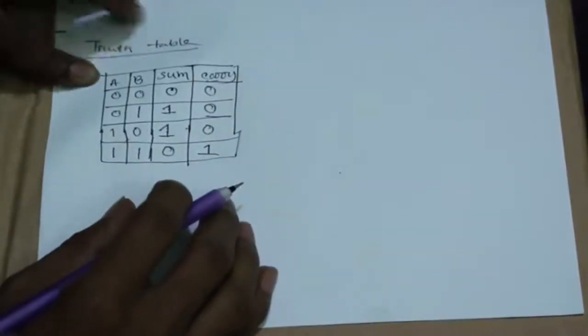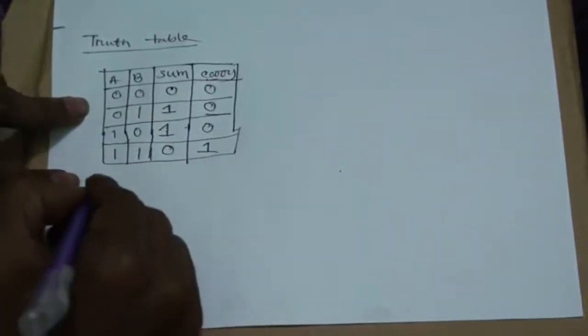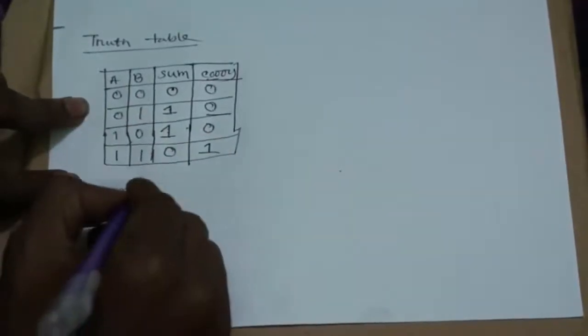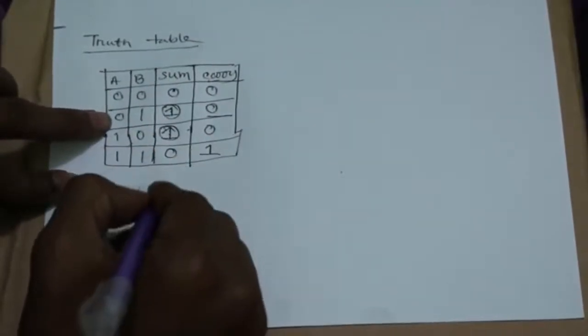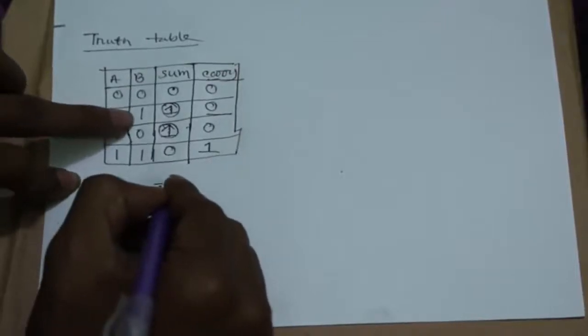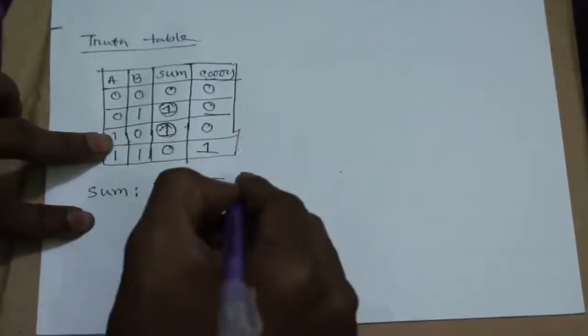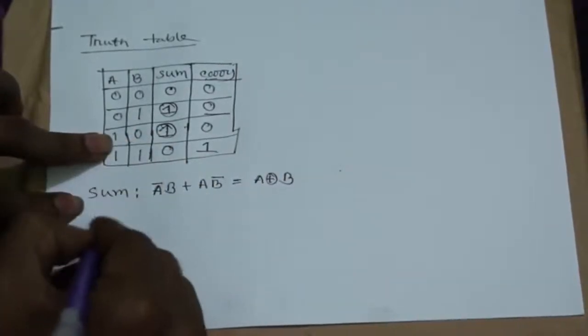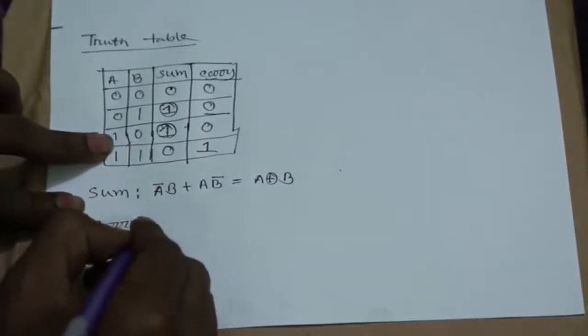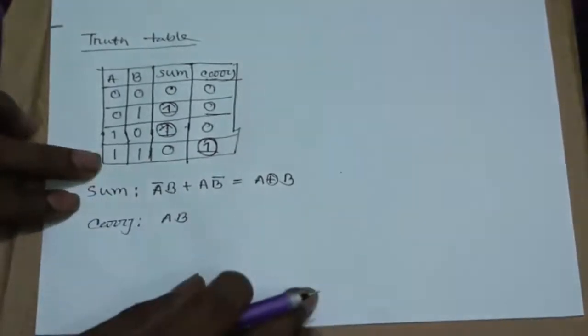Now, we make the min-term function of half adder. So the SUM function is here 1 and 1. So we can make A prime B plus A B prime which is similar to XOR gate. So we can write A XOR B. And the CARRY output, here is 1, so we can write A B.